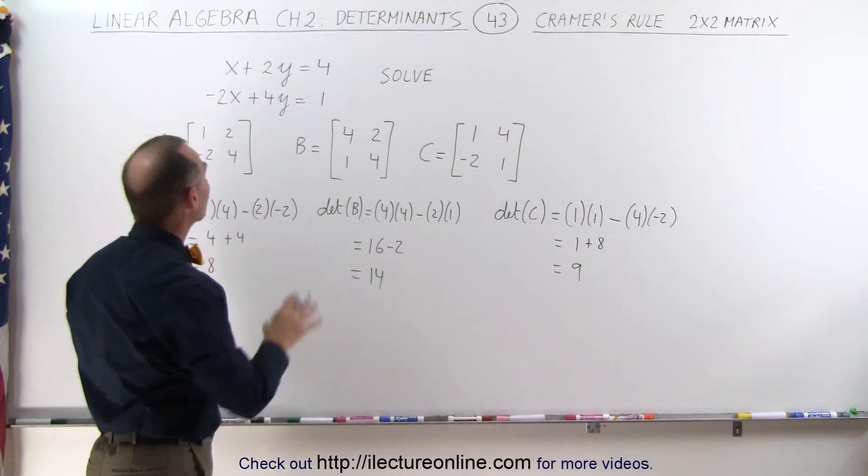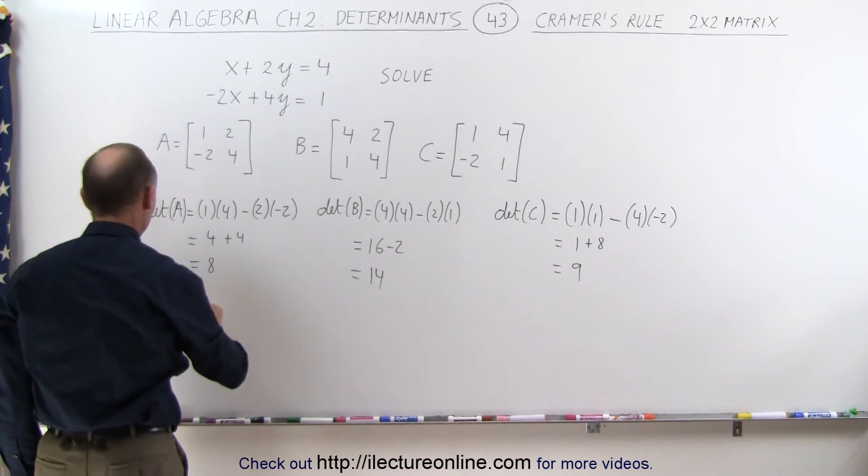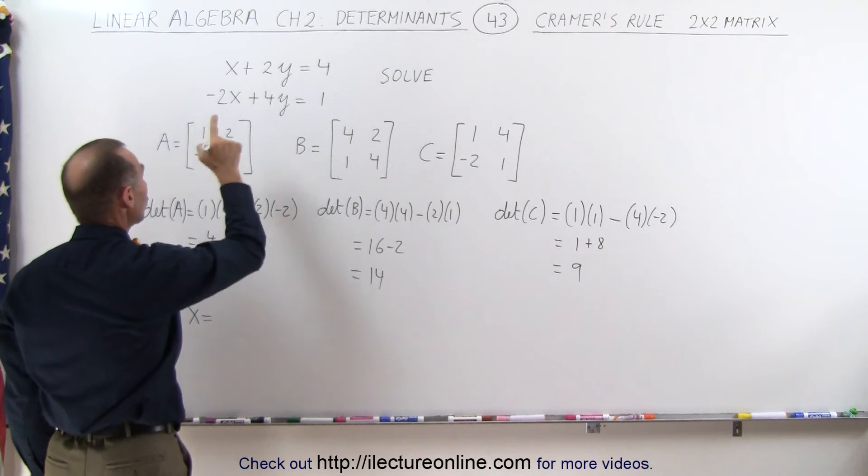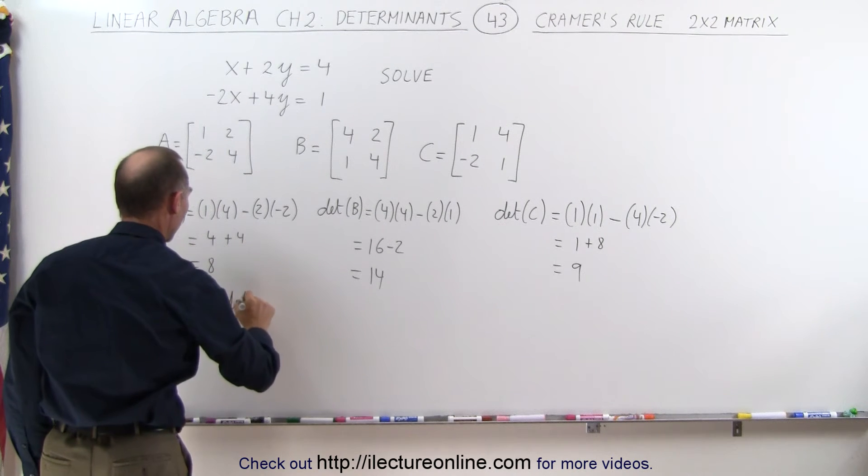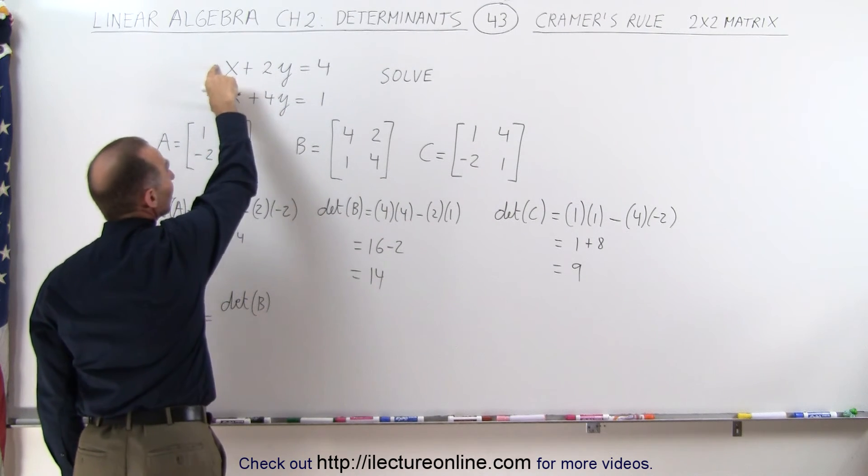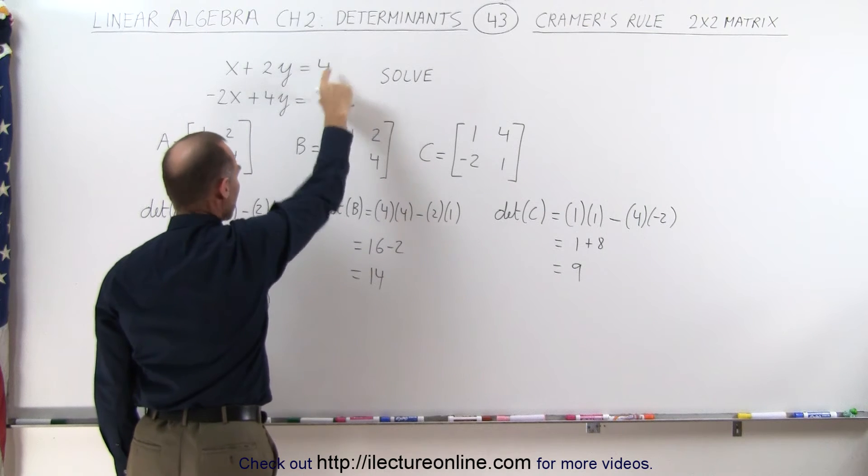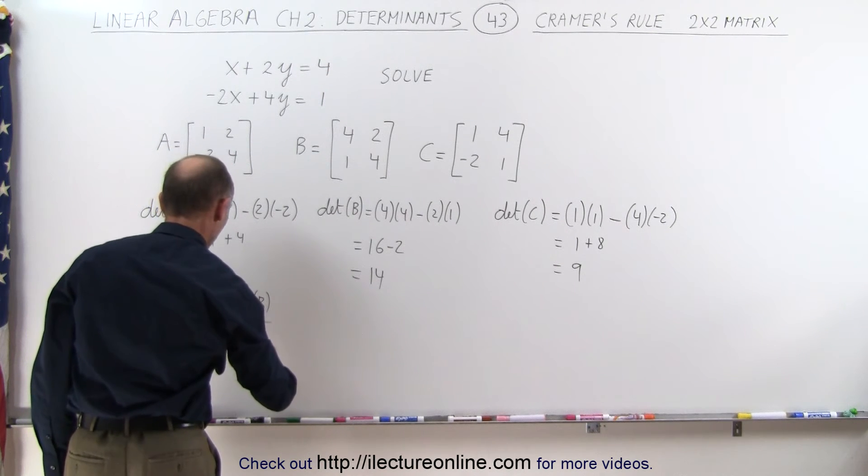Now to find the solutions for X and Y, by definition using Cramer's rule, the value for X that will satisfy those two equations is equal to the determinant of B. This is where we replace the coefficients of X by the constants here, and by taking the determinant of B divided by the determinant of A.